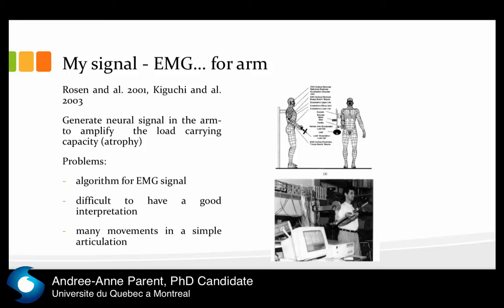One general application is using the arm signal to amplify load-carrying capacity. In this case, the person can move their arm normally but the load is amplified — you can lift a very heavy bag. The problem is the algorithm for interpreting the EMG signal. It's difficult to get a good interpretation because you have many micro-movements at a single articulation — it's hard to know if you want to go forward, backward, or rotate. The more articulations you have, the more difficult it becomes because of the many degrees of freedom, making it really hard to analyze and aggregate this signal.